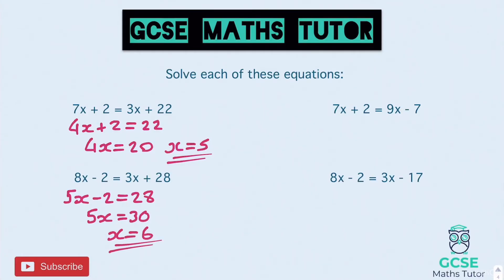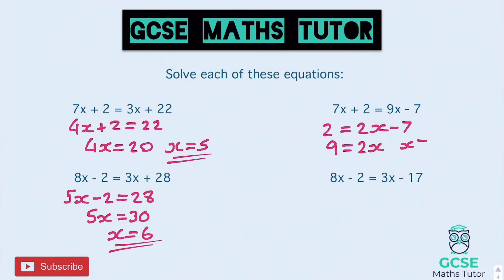Onto the top right — take away the 7x from both sides, we get positive 2, so 2 equals — take away 7x from the 9x — we've got 2x minus 7. Add 7 to both sides, we get 9 equals 2x, and then dividing by 2, we get x equals 9 over 2, which you can write as 4.5, but I'm just going to leave my answer as 9 over 2.